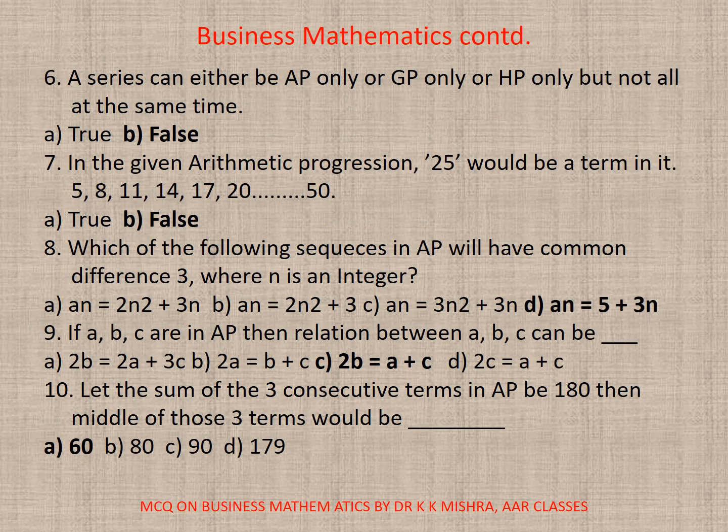Question 6. A series can either be AP only, or GP only, or HP only, but not at the same time. Is it true or false? It is false. Question 7. In the given arithmetic progression, 25 would be a term in it. You need to calculate, the answer will be false. So correct option is B.